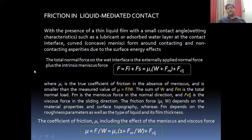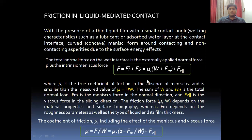In the case of liquid-mediated contact, or when there is a liquid present between two surfaces, in addition to the normal applied force, there is an intrinsic meniscus force present between the two surfaces. These menisci are formed due to surface energy effects. So the total overall normal force is the summation of the applied normal force plus the intrinsic meniscus force. You can use this equation to calculate the total normal force, where Fm is the total normal force and Fv is the viscous force in the sliding direction. Using this equation, you can calculate the coefficient of friction μ including the effect of meniscus and viscous forces in the case of liquid-mediated contact.